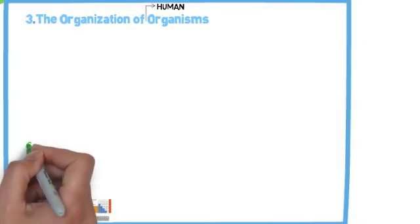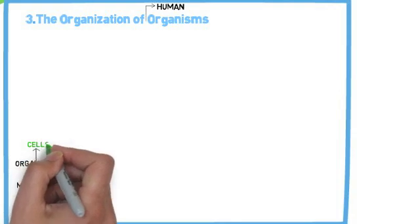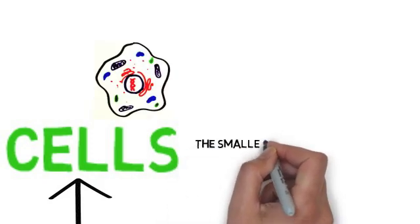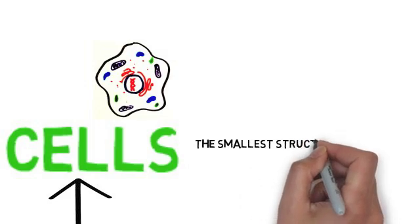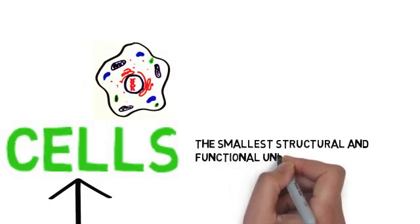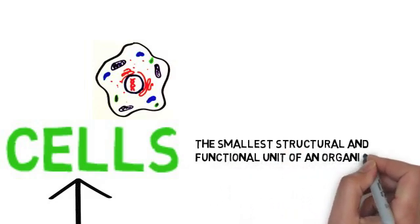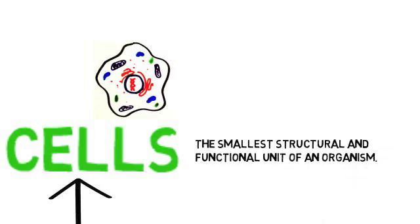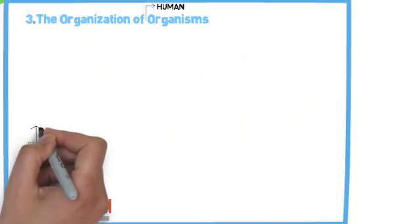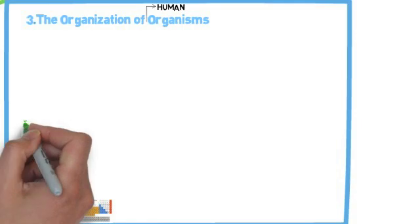So that brings us to cells. So far we have atoms, molecules, organelles, cells. And these cells can be a form of life if they're unicellular, and they are the smallest structural and functional units of life. One cell can be a life. But in our case, we have trillions of cells, and some of them are specialized. We have red blood cells, we have neurons, we have muscle cells, bone cells, skin cells, eye cells. And that brings us to our next level of organization, tissues.